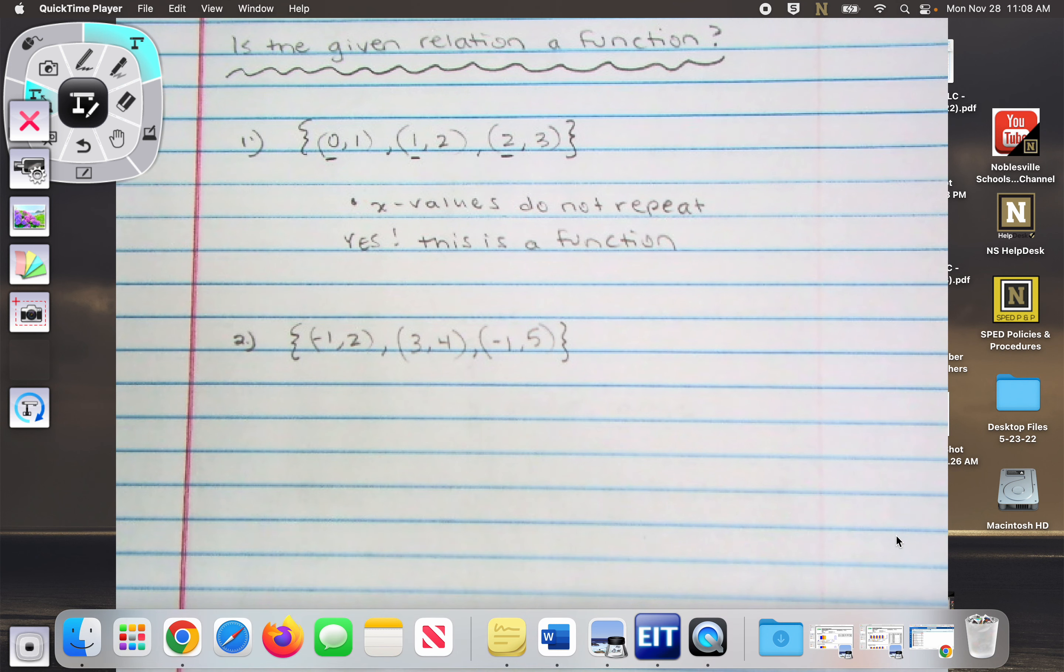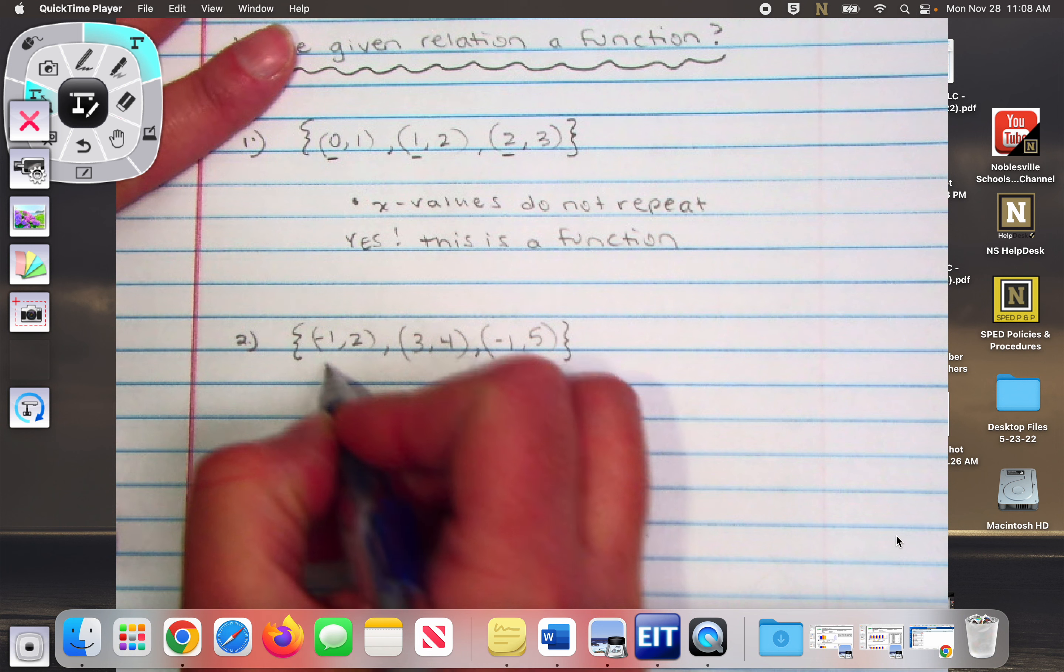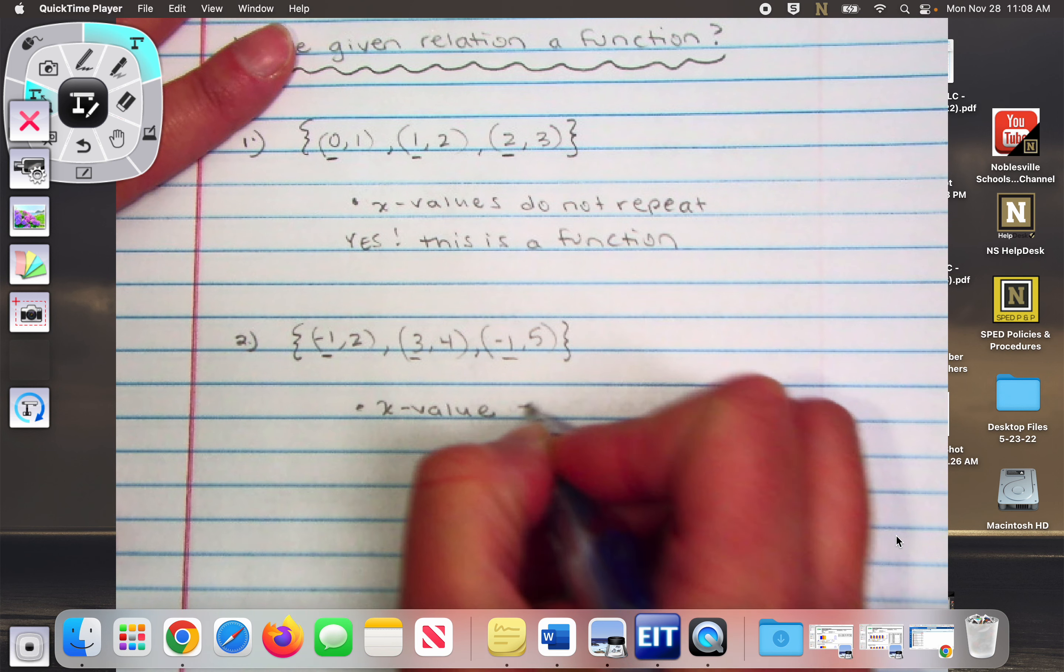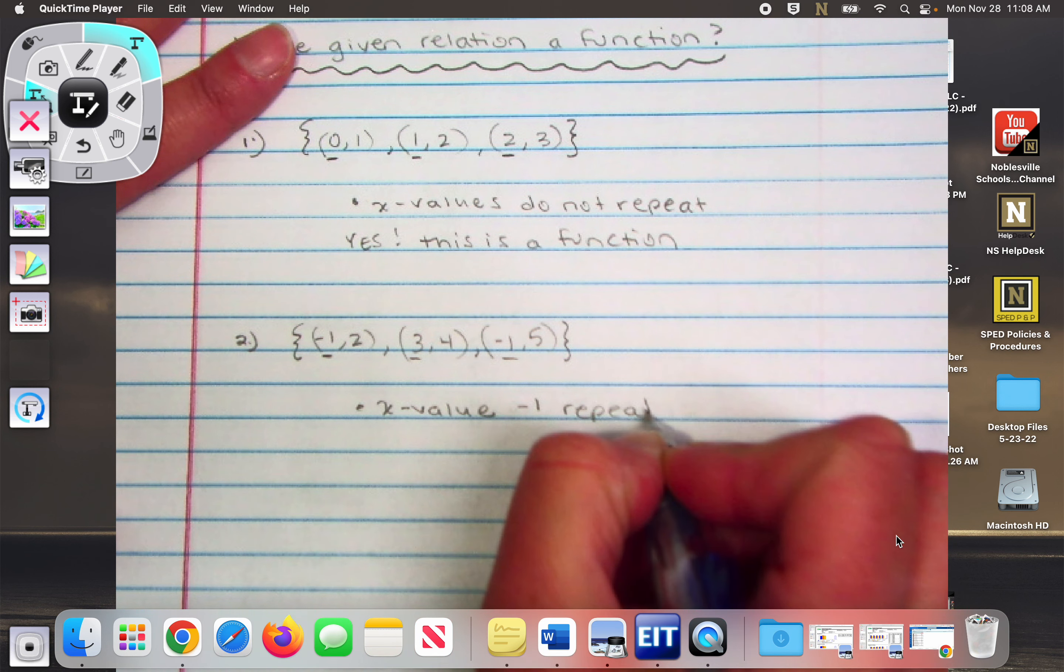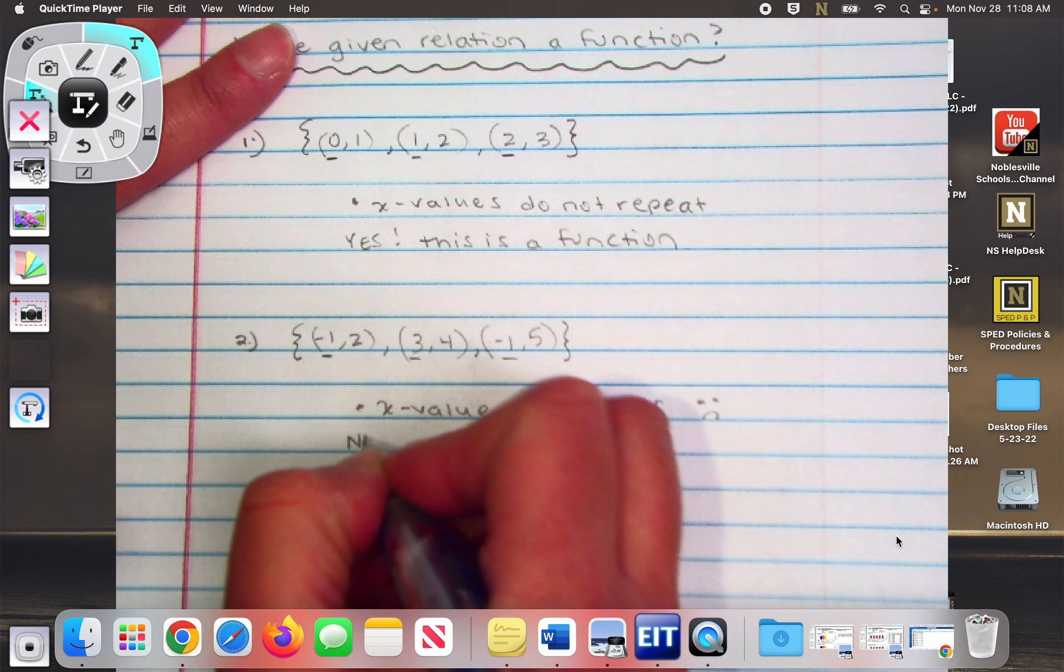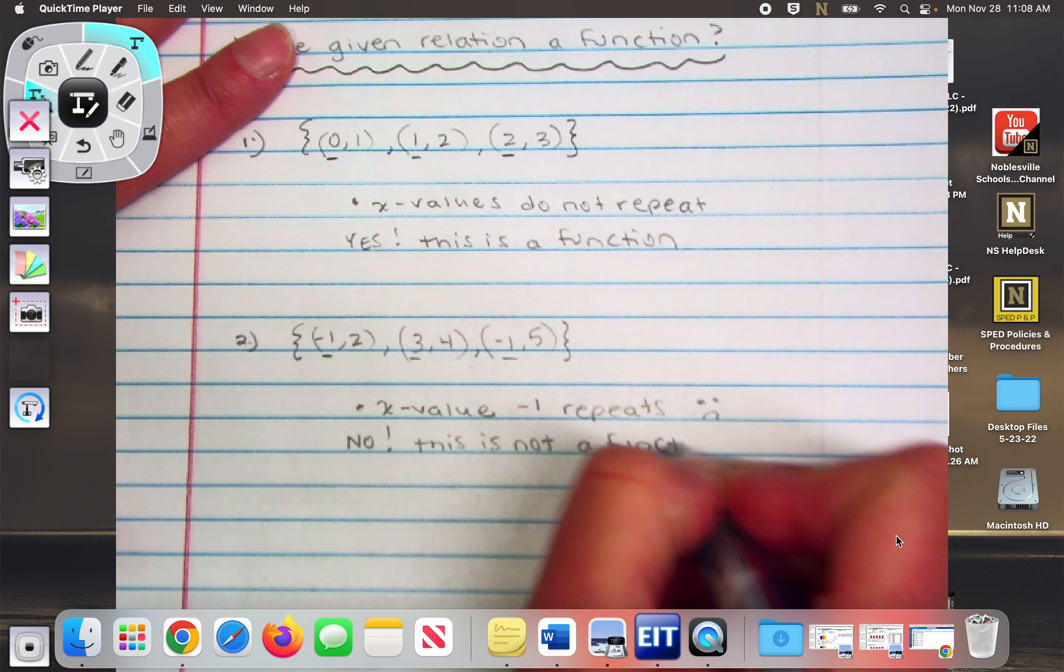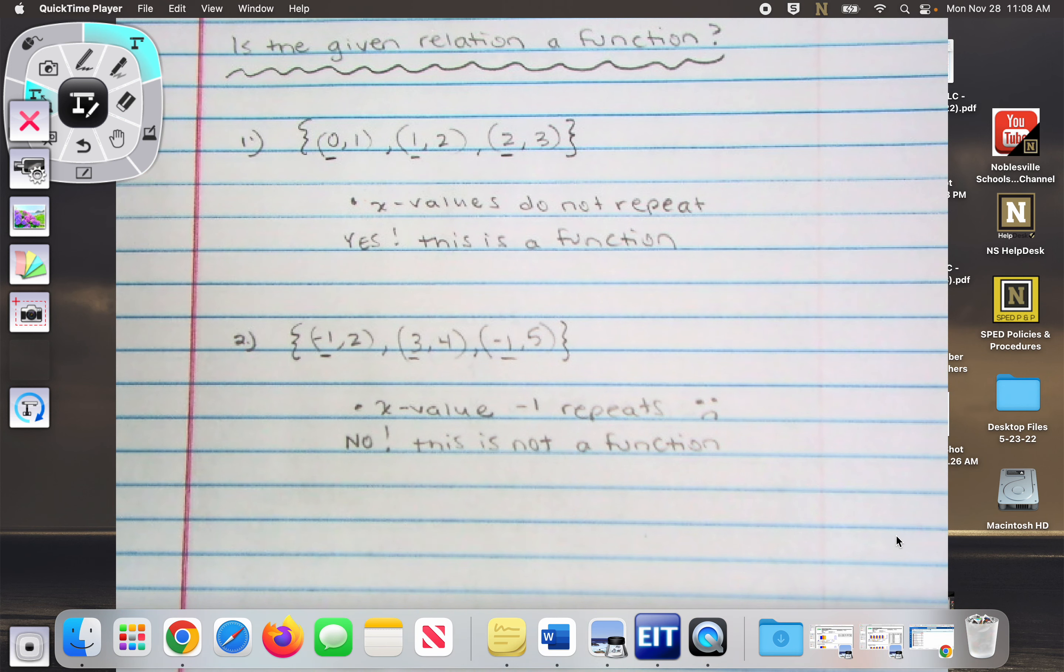Is this relation a function? Hayden's saying no, it's not a function. Wait, what is the rule? X values cannot repeat. What are my three x values for this relation? So do any of the x values repeat? Yes. So that disqualifies it. It is not a function. The x value negative one repeats. Sad face. No, this is not a function. As soon as your x value repeats, no bueno.